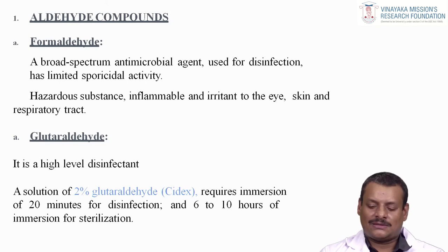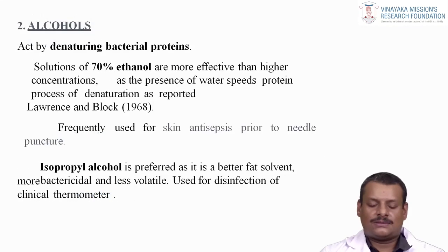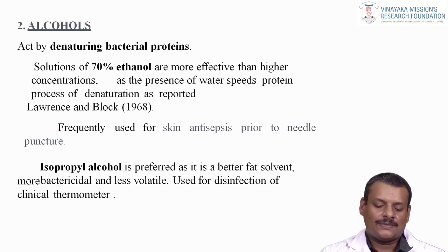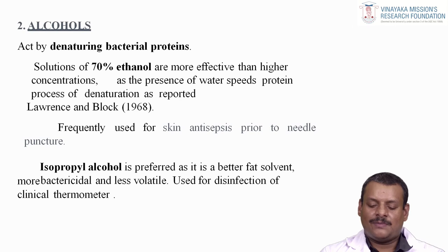Alcohols act by denaturing bacterial proteins. Solutions of 70% ethanol are more effective than higher concentrations, as the presence of water speeds the process of protein denaturation, as reported by Lawrence and Block in 1968. Alcohols are frequently used for skin antisepsis prior to needle puncture. Isopropyl alcohol is preferred as it is a better fat solvent, more bactericidal, and less volatile; it is used for disinfection of clinical thermometers.